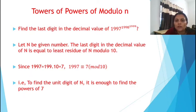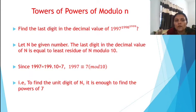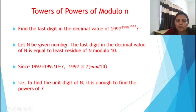In this type of problem we have 2 to 3 powers. The problem is: first, find the last digit in the decimal value of 1997 raised to 1998 raised to 1999. In this type of towers of powers, we have to find the unit place of that value. Let n be the given number. The last digit in the decimal value of n is equal to the least residue of n modulo 10.